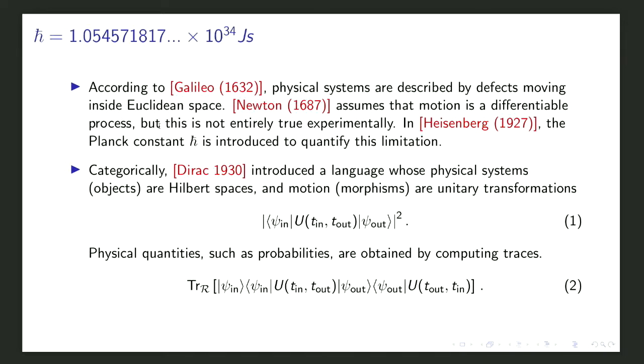There are two things to consider: a map between two different types of Hilbert spaces, or a map that preserves the Hilbert space. The first type involves kernels, images, and co-kernels. The second type has something more interesting, which is the spectrum, and those are the symmetries.